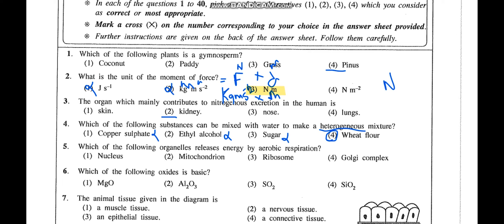Summary so far: Question 1 — pinus; Question 3 — kidney; Question 4 — wheat flour. Question 5: Which organelle releases energy by aerobic respiration? Nucleus controls life activities, ribosomes are non-membrane-bounded organelles involved in protein synthesis, and Golgi complex is involved in packaging and distribution of secretory substances. Mitochondria is the powerhouse of the cell which releases energy by aerobic respiration — that is the answer.